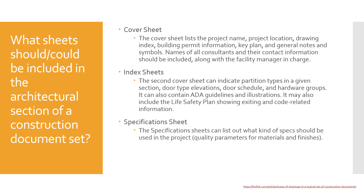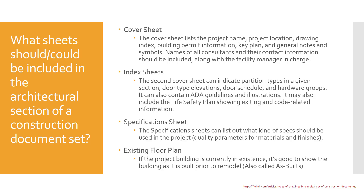There's something called a specification sheet, though not every construction document set has this, because a lot of times specifications are put together in separate books outside of the construction set. Specifications are basically the quality parameters for materials and finishes — what quality of paint, what's the sheen, what's the color, and what's the lifetime warranty. Spec sheets are really an interior designer thing and can be in a separate book or in the set itself. Existing floor plans are also included if the building is being remodeled, showing the building as it currently exists — also called as-built drawings in the field.